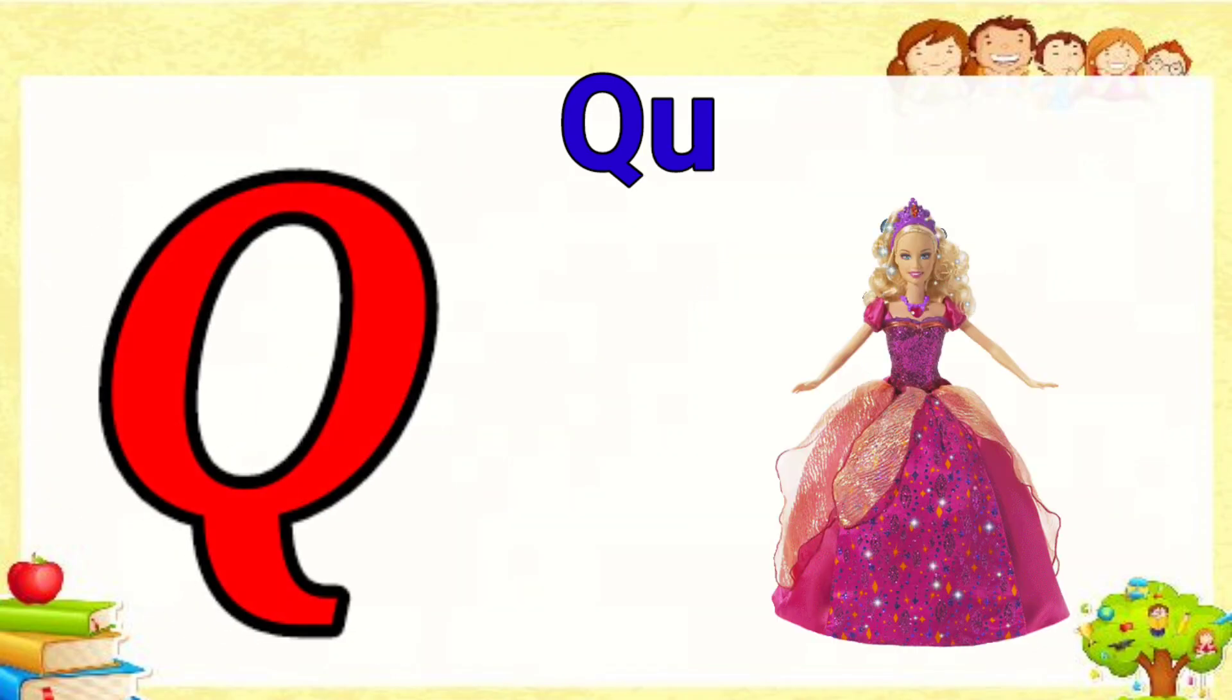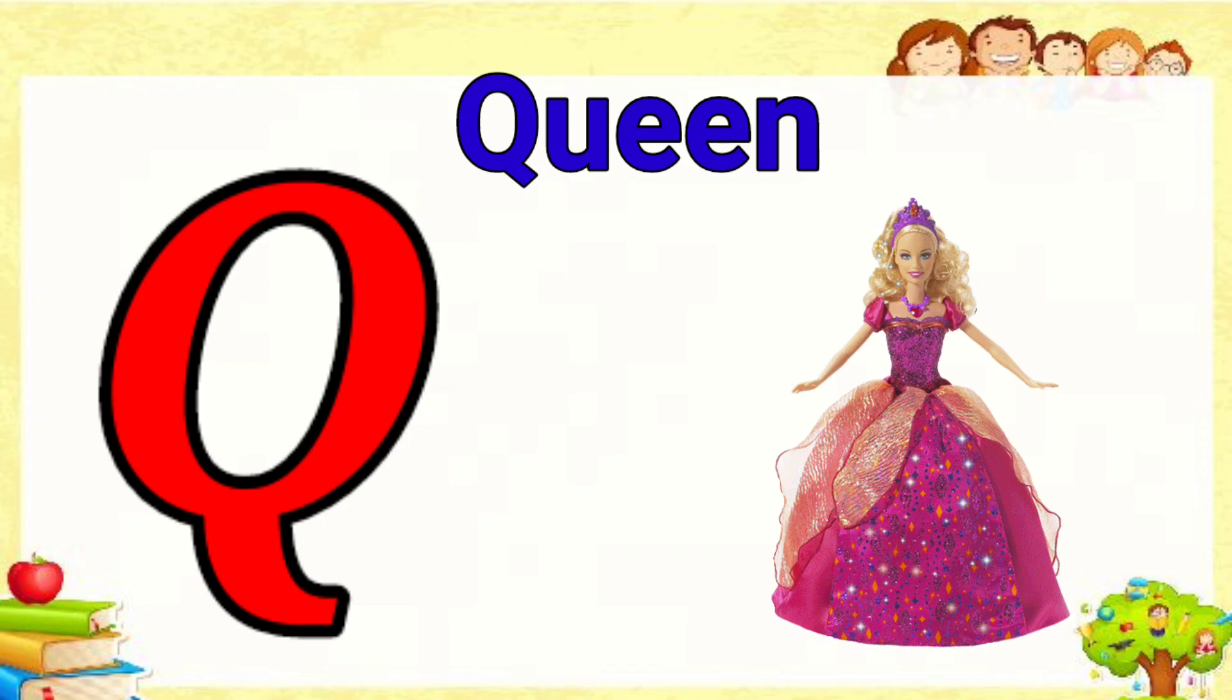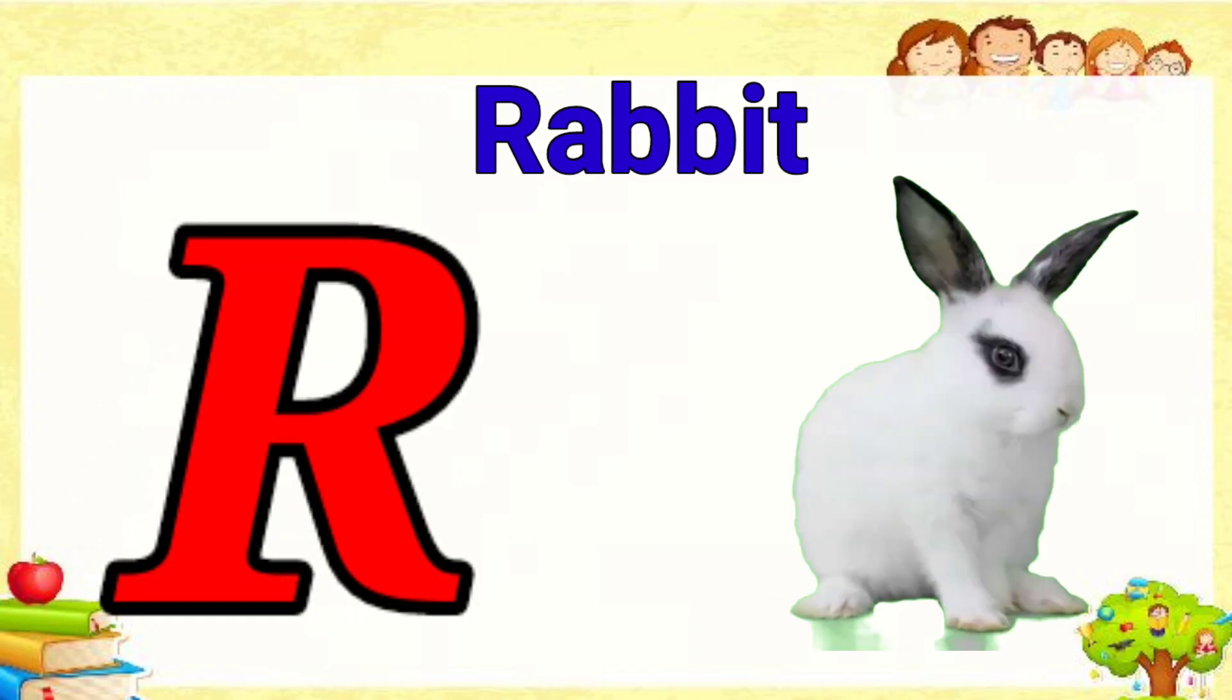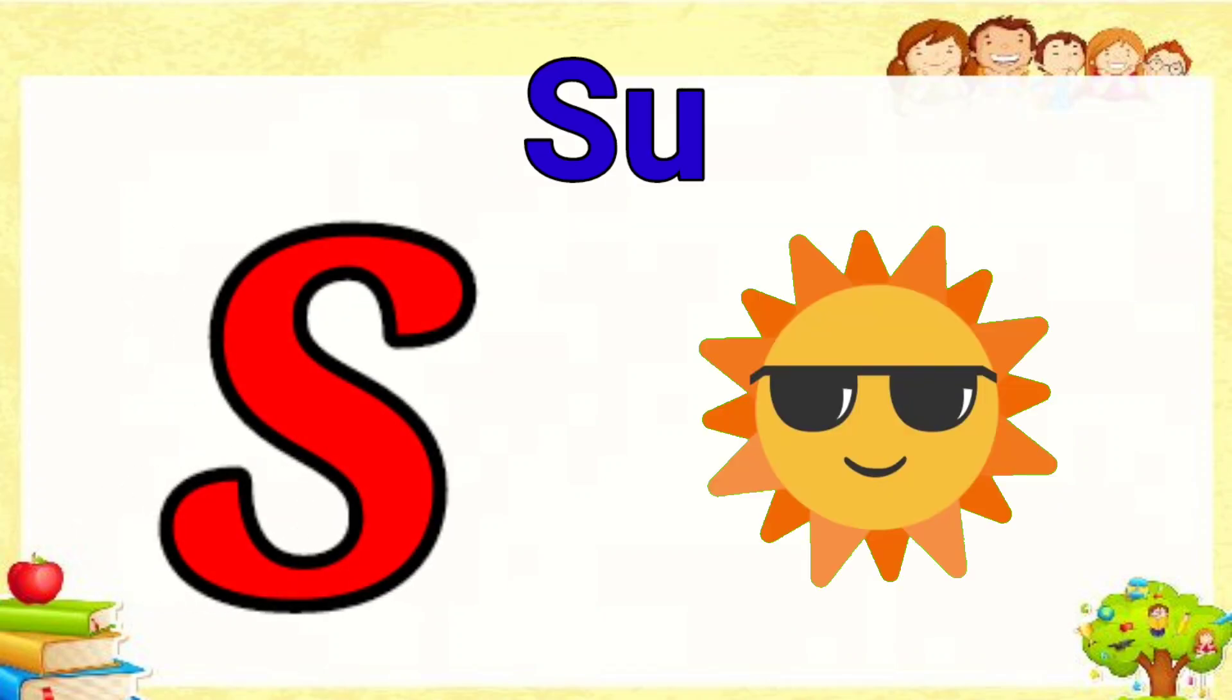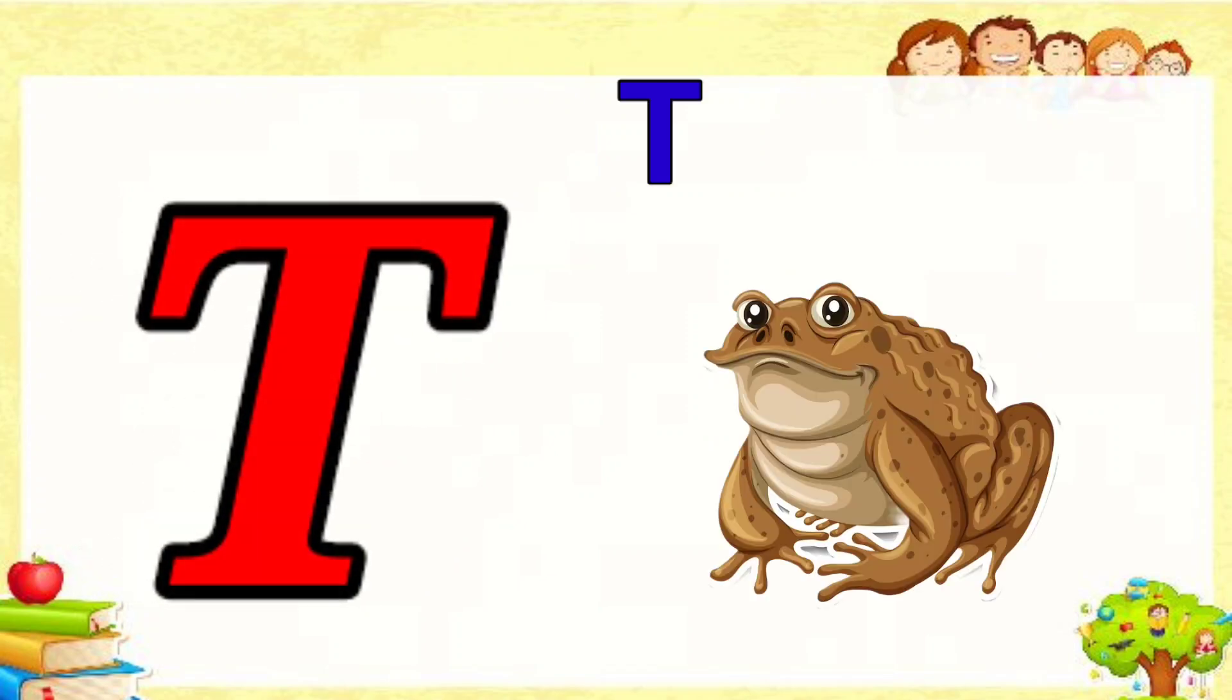Q is for queen, q-q-queen. R is for rabbit, r-r-rabbit. S is for sun, s-s-sun. T is for toad, t-t-toad.